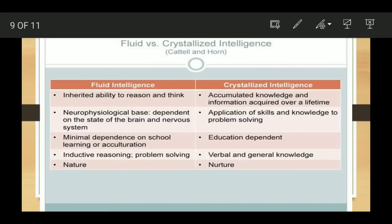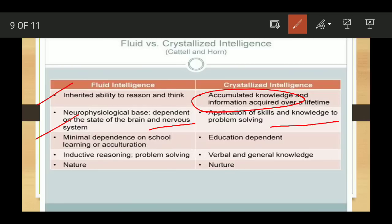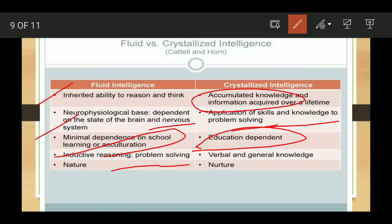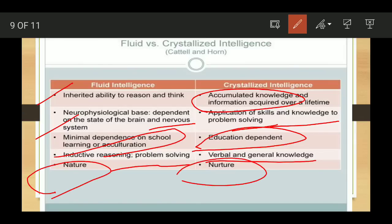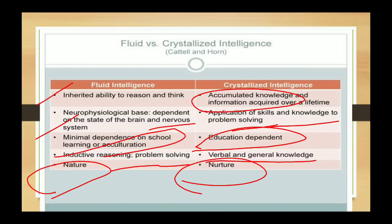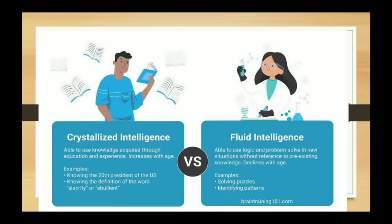To recap the differences: Fluid Intelligence is inherited, has a neuro-physiological base, and declines due to neurological changes. Crystallized Intelligence is accumulated knowledge over a lifetime, involving acquired skills and knowledge. Fluid Intelligence depends on school learning, involves inductive reasoning and problem solving, and is nature-based. Crystallized Intelligence is dependent on education, experience, and cultural background, includes verbal and general knowledge, and is nurture-based — it is acquired.